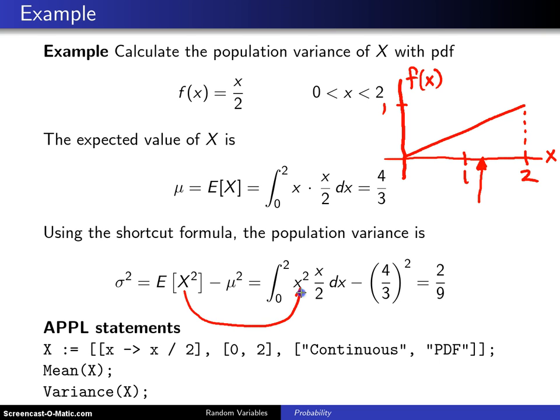This x squared goes right there. You have the integral over the support from 0 to 2 of x squared multiplied by the probability density function x over 2 dx, and then you want to subtract off the population mean squared, so the population mean is 4 thirds squared.